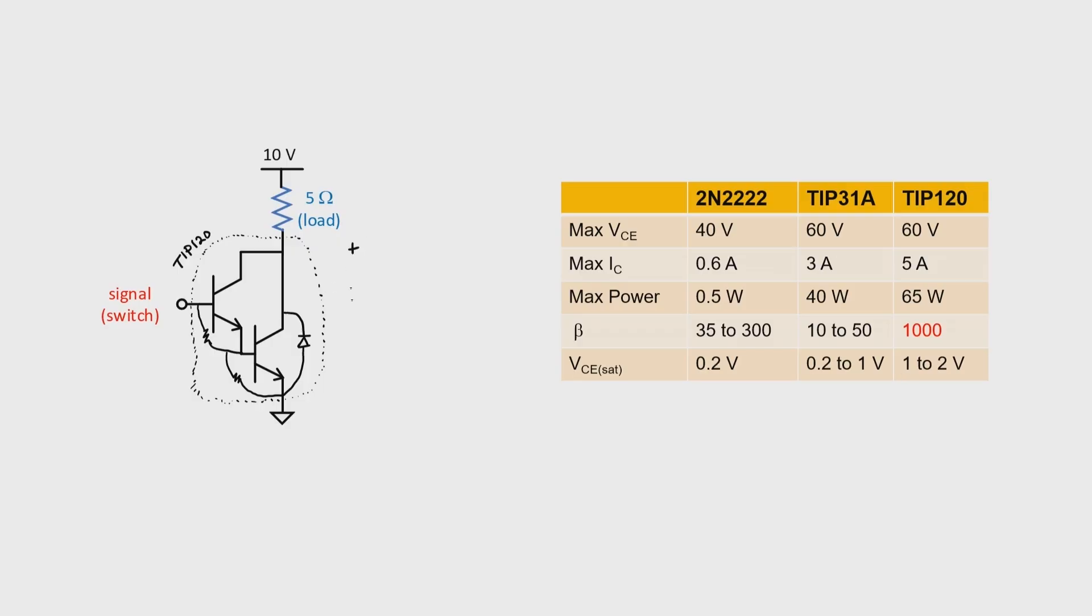Let's take the worst case scenario for the VCE saturation of our TIP120 and assume that it's one volt. Let's again find our collector current. Using Ohm's law, our collector current is going to be about 10 minus 1 divided by 5 or 1.8 amperes. Our transistor can handle 5 amps, so we're okay in terms of the collector current. In terms of the maximum power dissipation, it can dissipate 65 watts. We're fine because we only have 1.8 watts here.